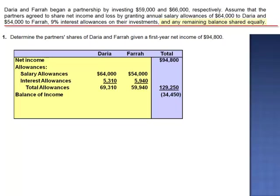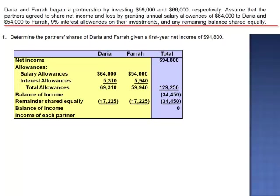The partnership agreement specifies that any remaining balance is shared equally. In this case, we're sharing a negative amount. Negative $34,450 split equally is a negative $17,225 for each partner. After the remainder is shared equally, there is no balance of income. The total allocation of income to Daria is $52,085 — the allowances of $69,310 minus the remainder of $17,225.